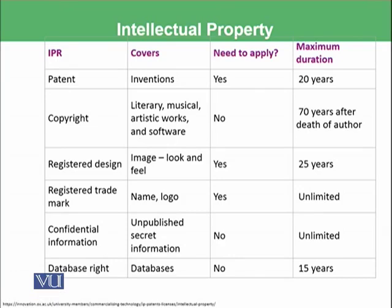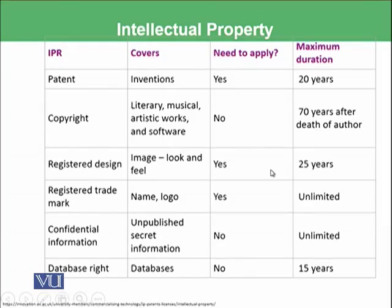Confidential information covers unpublished secret information. You do not need to apply, and its duration is unlimited. Database right covers only databases, you do not need to apply, and it lasts for 15 years.